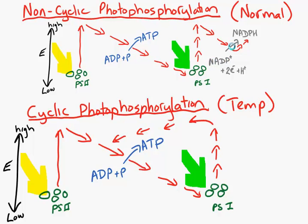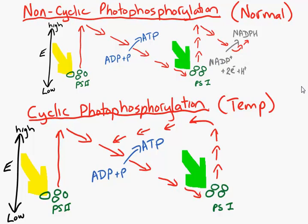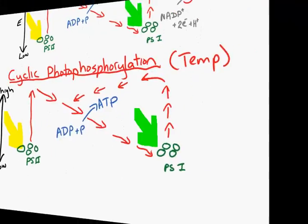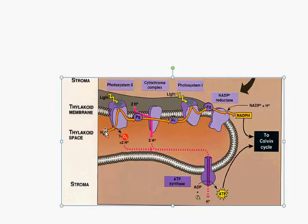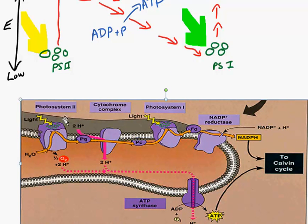We can actually couple what's happening during photophosphorylation with what's going on in the thylakoid membrane. Now you see the thylakoid, the space where hydrogen ions are concentrated, and their movement through ATP synthase. And what we can do is remove the label so it fits better.